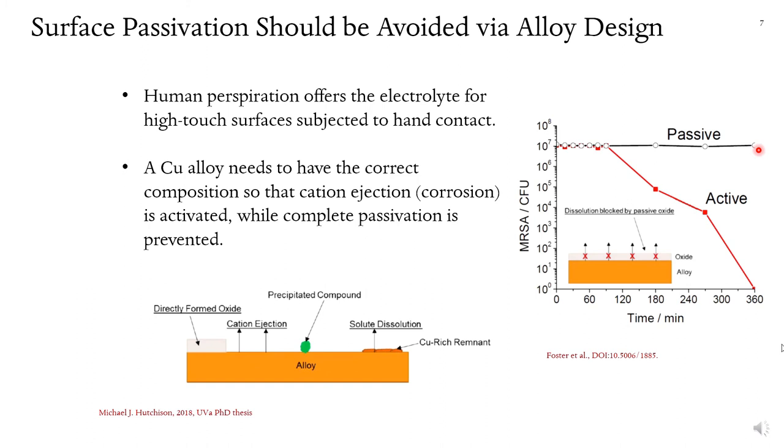So what is the mechanism? It turns out when our hands touch these copper surfaces, the human perspiration provides the electrolyte necessary for the copper corrosion to occur. Now it is important to smartly engineer the composition of these copper alloys so that active corrosion is favored. During active corrosion, the cation ejection is happening, so the copper ions are dissolved. And other alloy elements that promote passive film formation should be avoided.